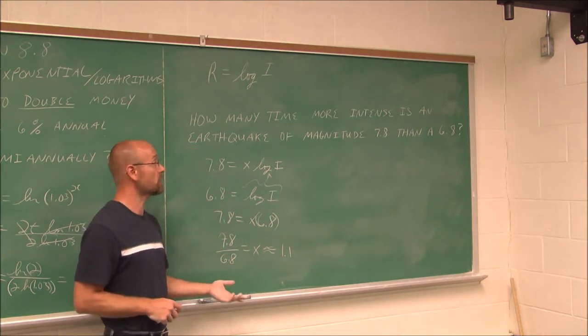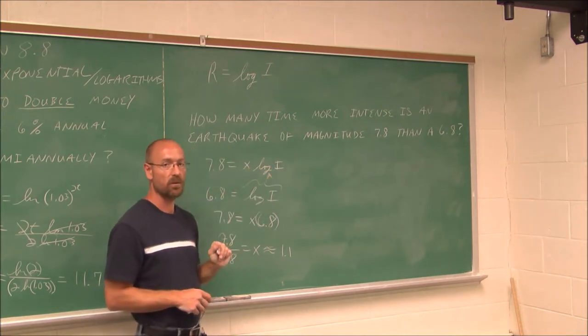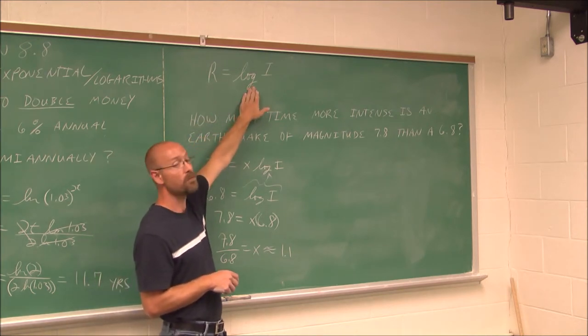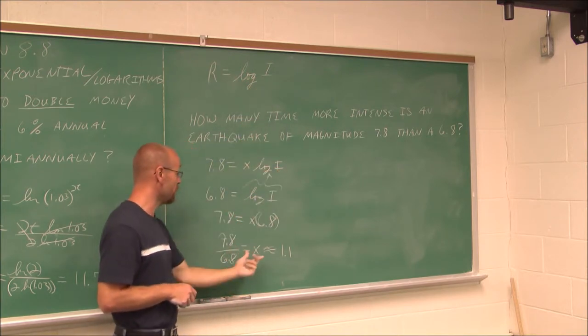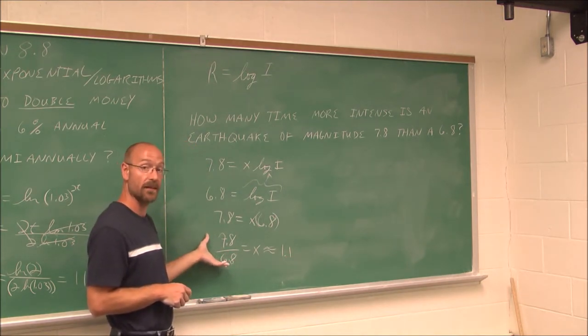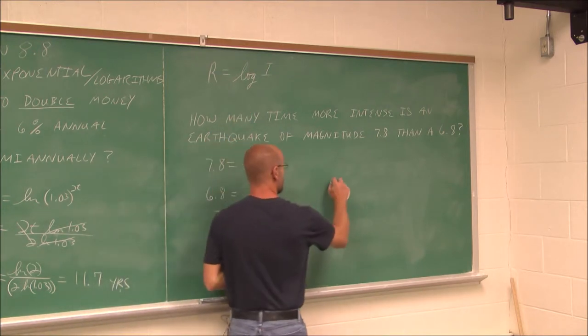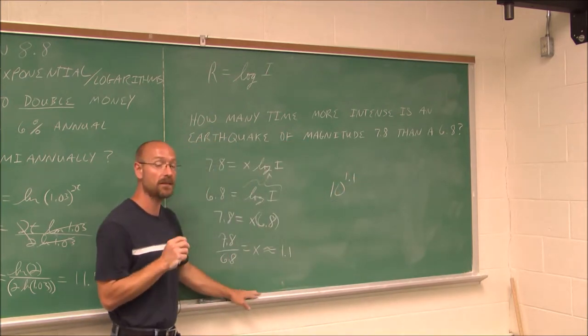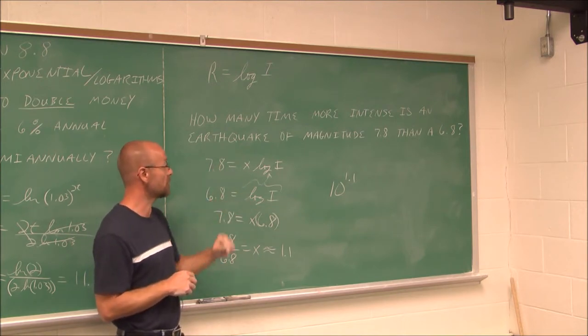Does this answer the question? We have to relate it to this equation. We have to recall, what was the base? Because logarithms tell us what the exponent is. What we found here was the exponent, not the multiple of how intense this value is. Our base is base 10. So 10 to the 1.1 is how many times more intense this 7.8 is compared to a 6.8.